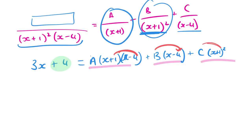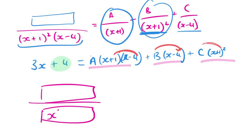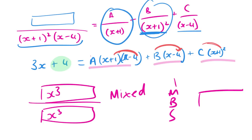Always remember that if the denominator has the same degree as the numerator — if this is a cube and this is a cube — this is improper. If this is an improper fraction, you need to convert it to a mixed fraction first. You need to do the division first before you can do partial fractions. Partial fractions does not work for improper fractions. The degree on the numerator needs to be less than the denominator — it can't be the same or bigger.